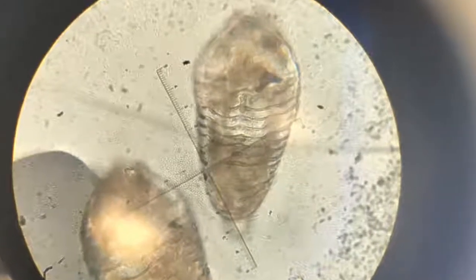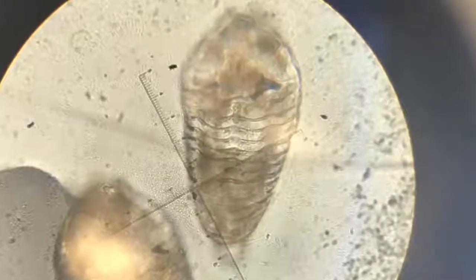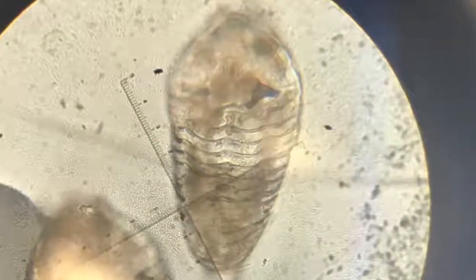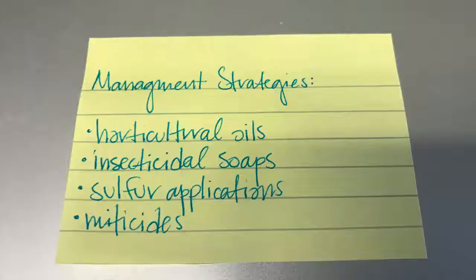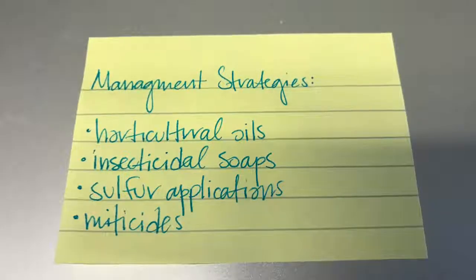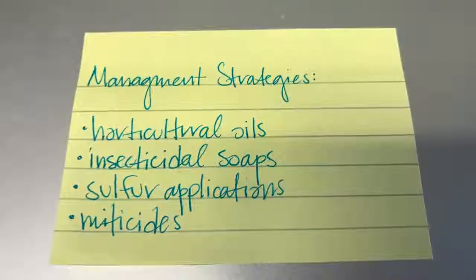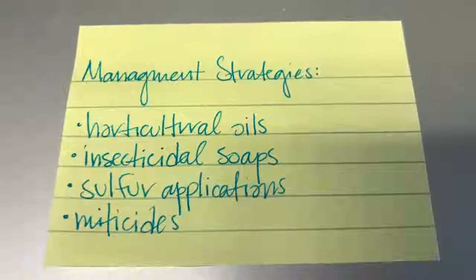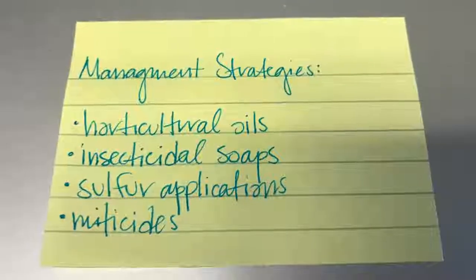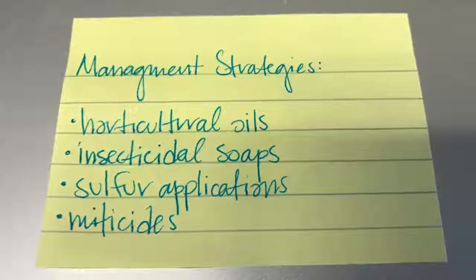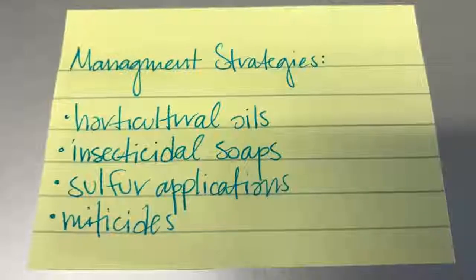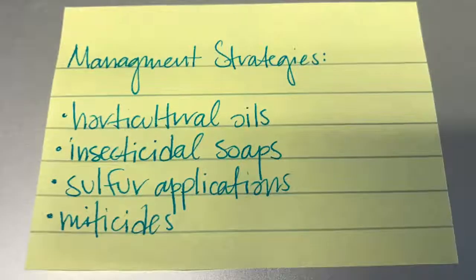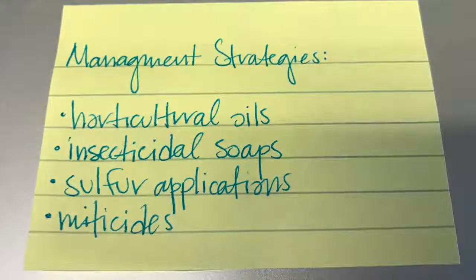These mites can transmit some plant diseases caused by viruses or phytoplasmas, such as rose rosette virus, and they're spread usually by wind. Management strategies include horticultural oils, insecticidal soaps, sulfur applications, and miticides. However, since they're really hard to see, it's hard to know when you have an infection.